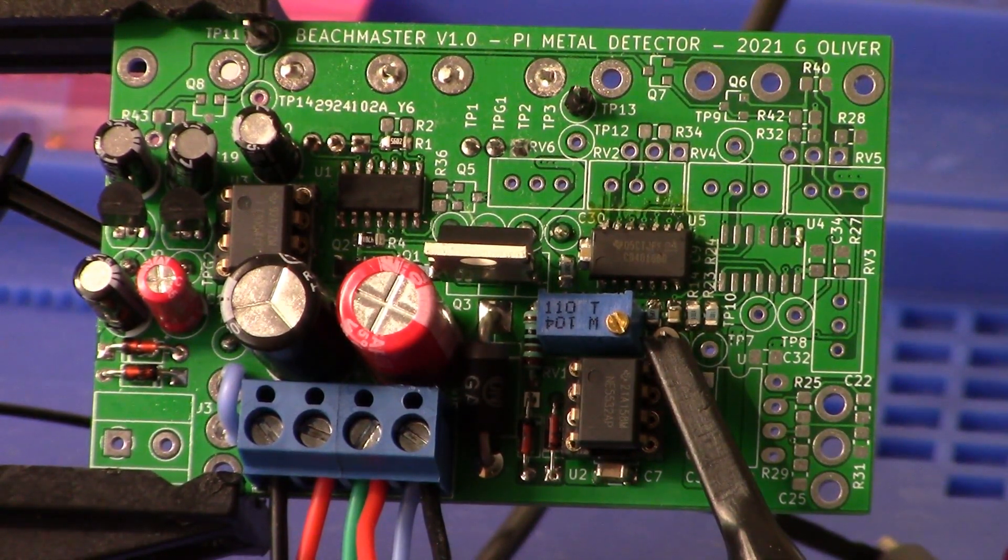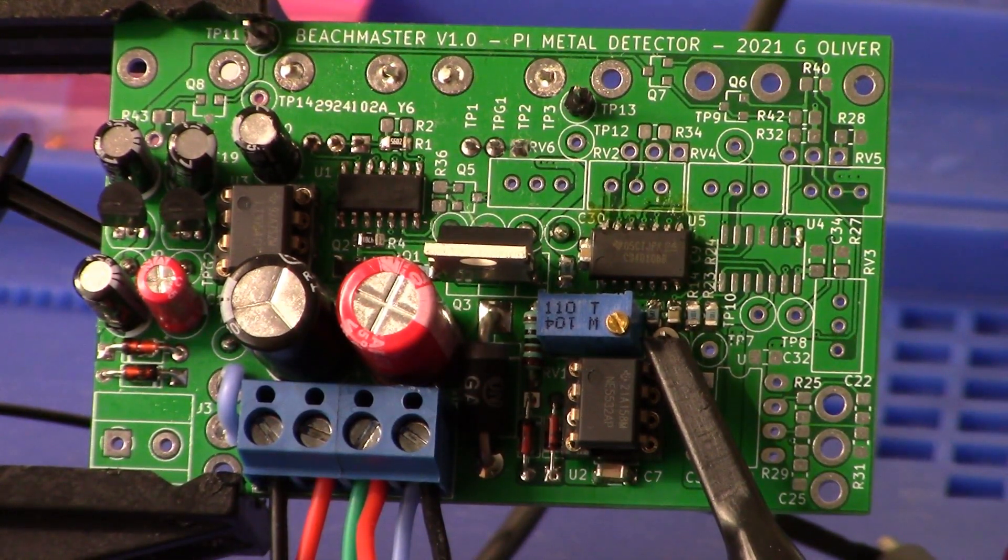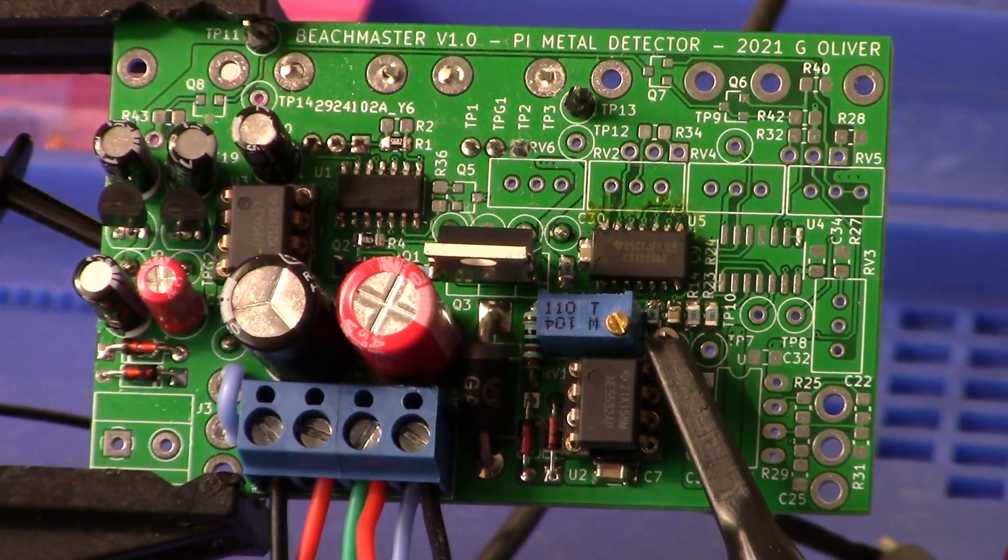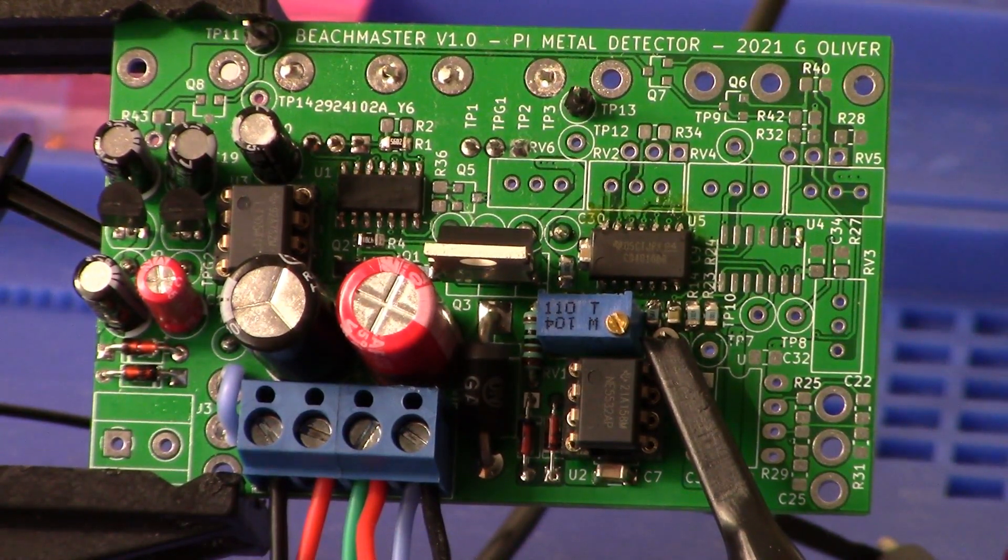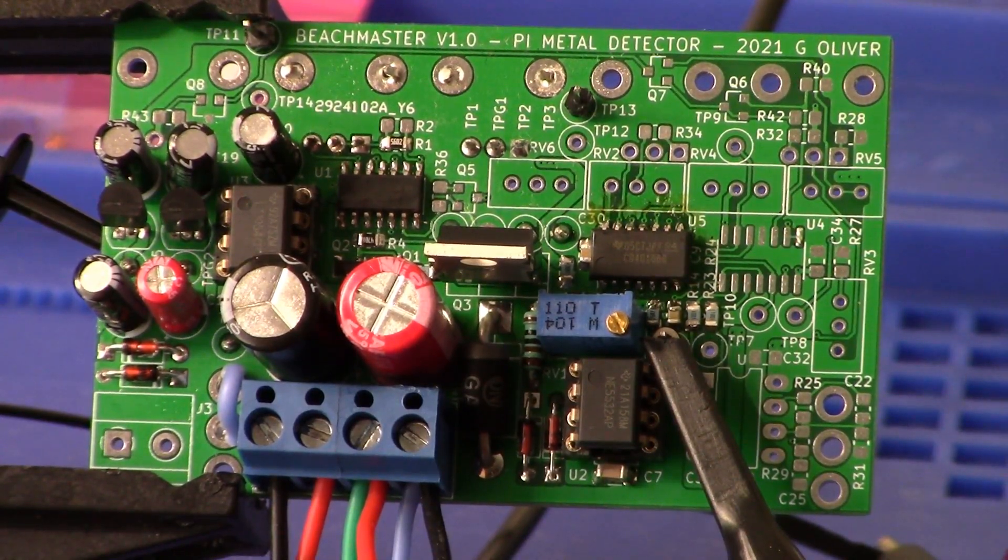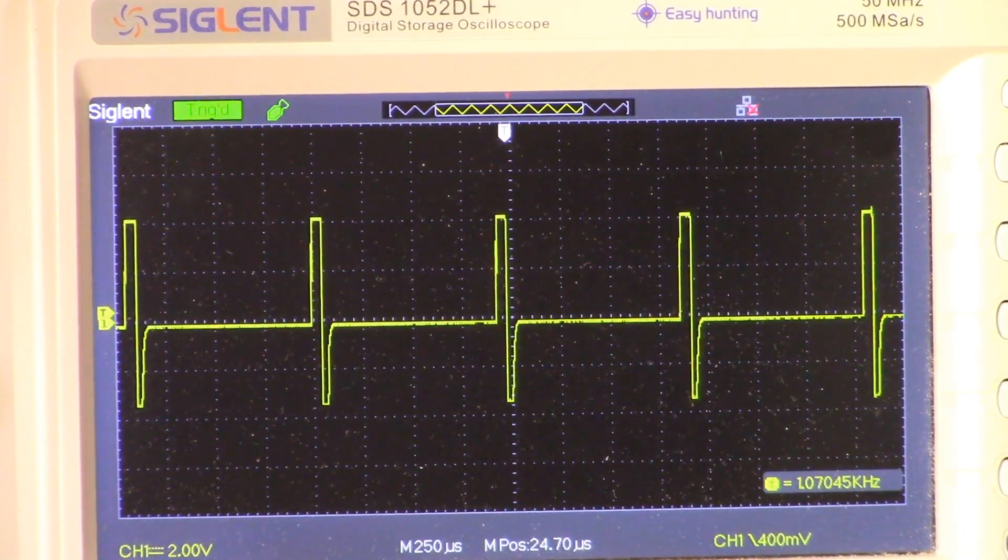You can see I've got my probe hooked up to test point number four, and I have the ground on the back side of the board. Let's take a look at the oscilloscope so we can see what the preamp signal looks like. All right guys, on screen you see the preamp signal.